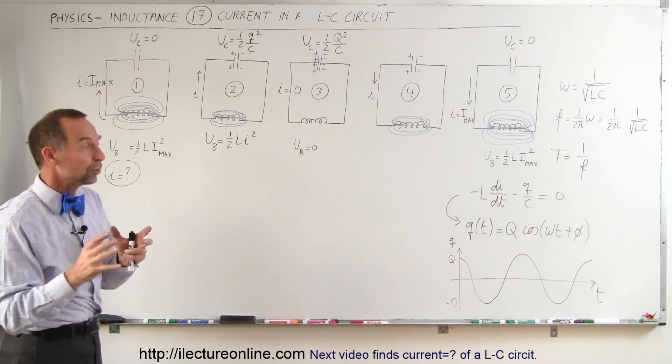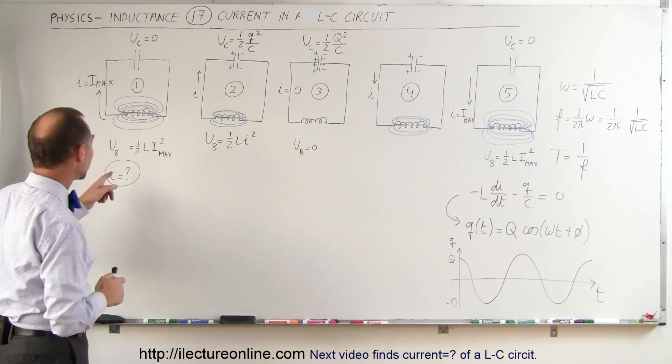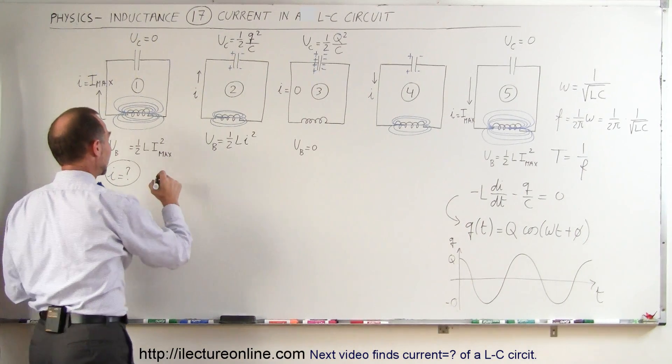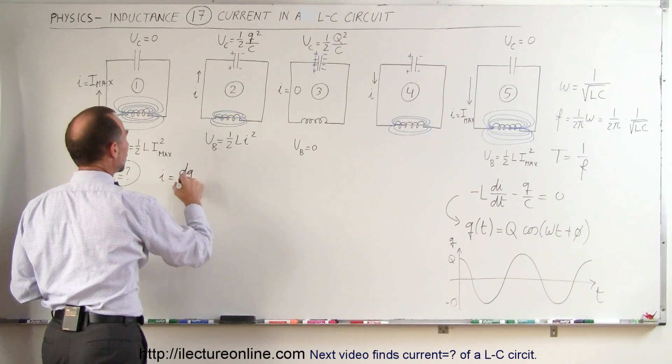But what if we want to know the current at any point in time in a circuit like this? Well we realize that the current can be defined in terms of I is equal to dQ dt.